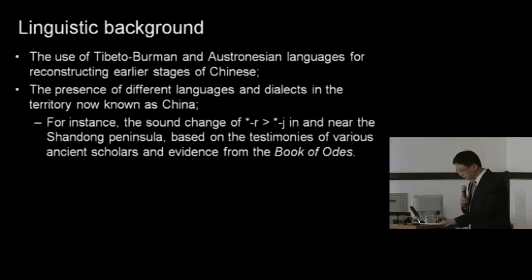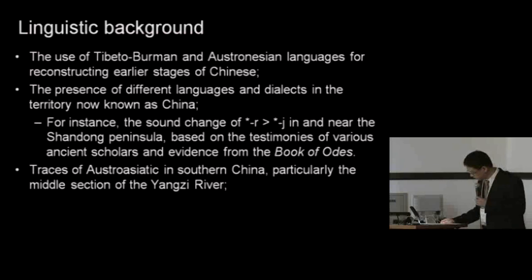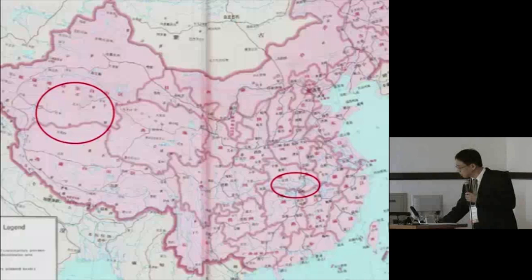Added to this, one should take into account traces of Austro-Asiatic and perhaps even Tocharian and Indo-European language in the Tarim Basin of the northwest. So all this suggests a linguistic situation different from what we usually attribute to ancient China.